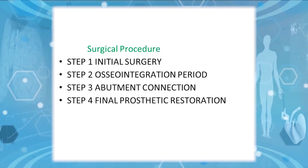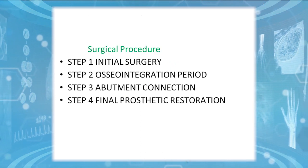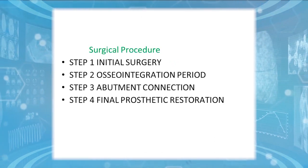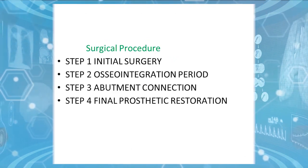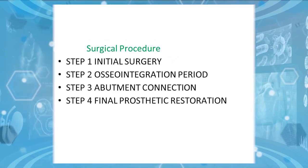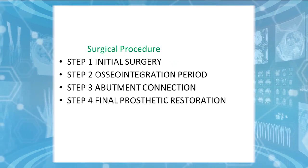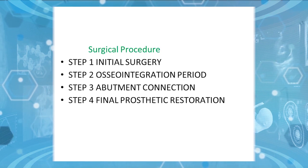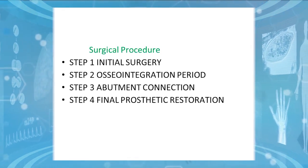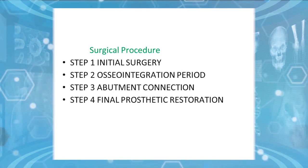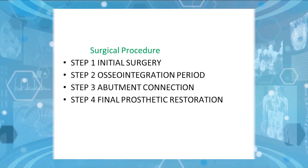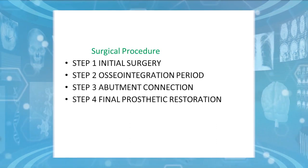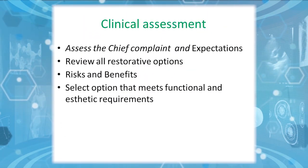Regarding the surgical placement phase, there are four main steps. Step one is the initial surgery. Step two is the osseointegration period — the time between implant placement and fusion with the bone. Step three is the implant abutment connection, where the artificial crown is connected to the dental implant. The final stage is the final prosthetic restoration, which is the delivery of the crown to the dental implant.